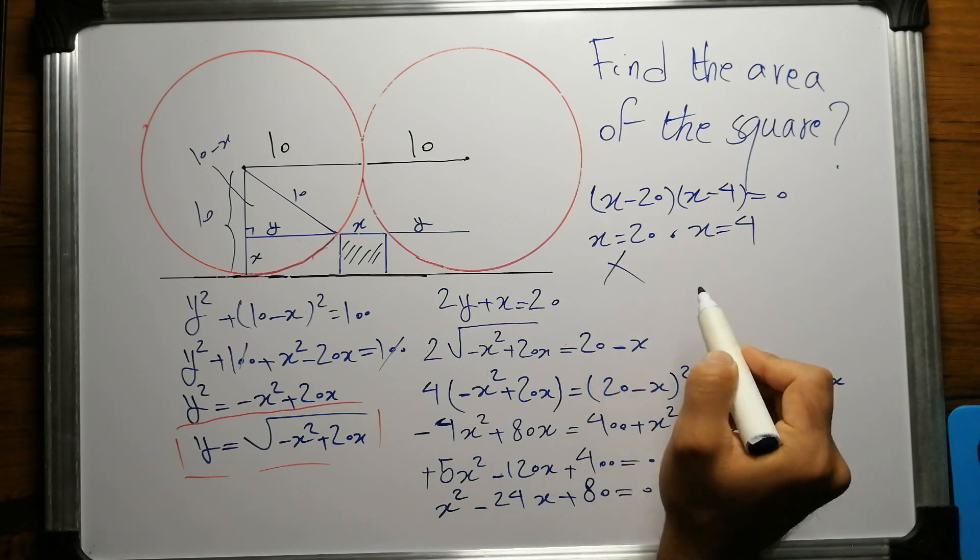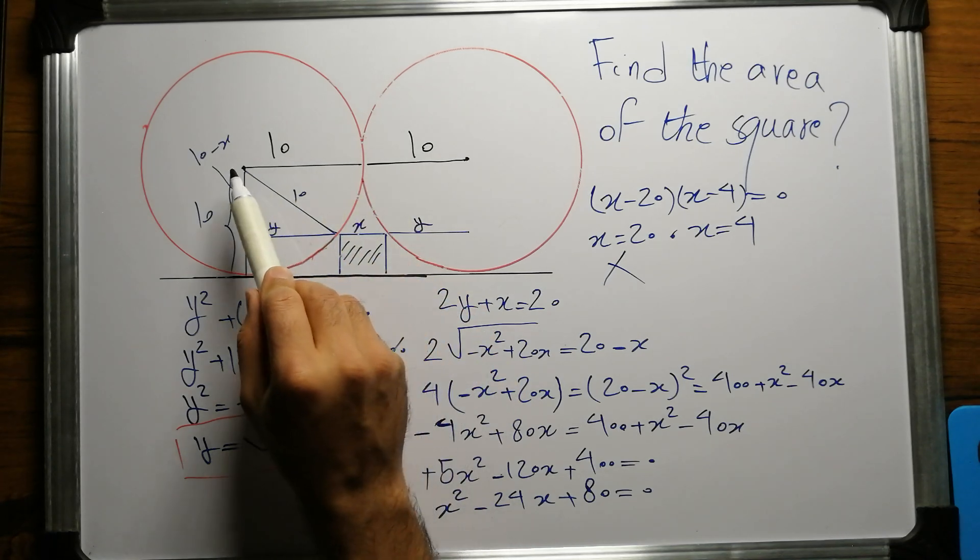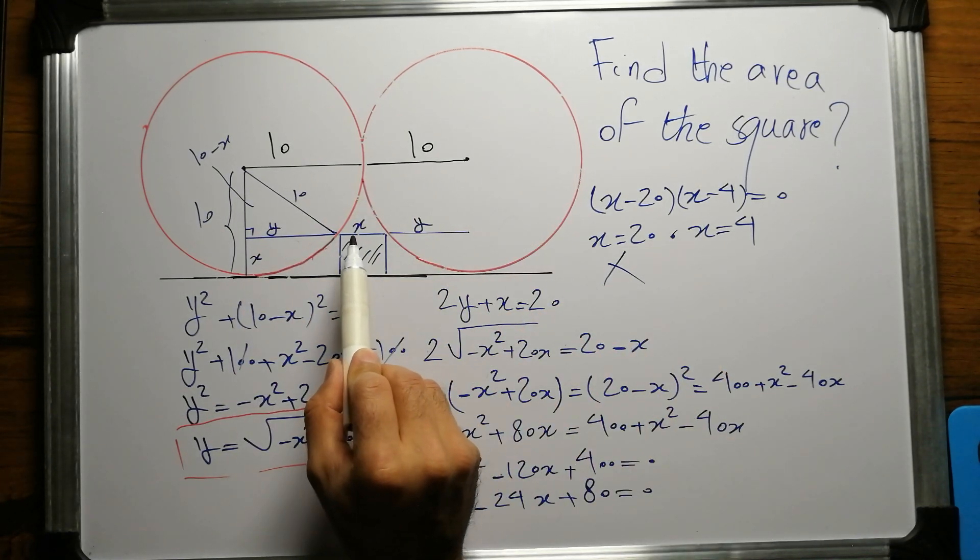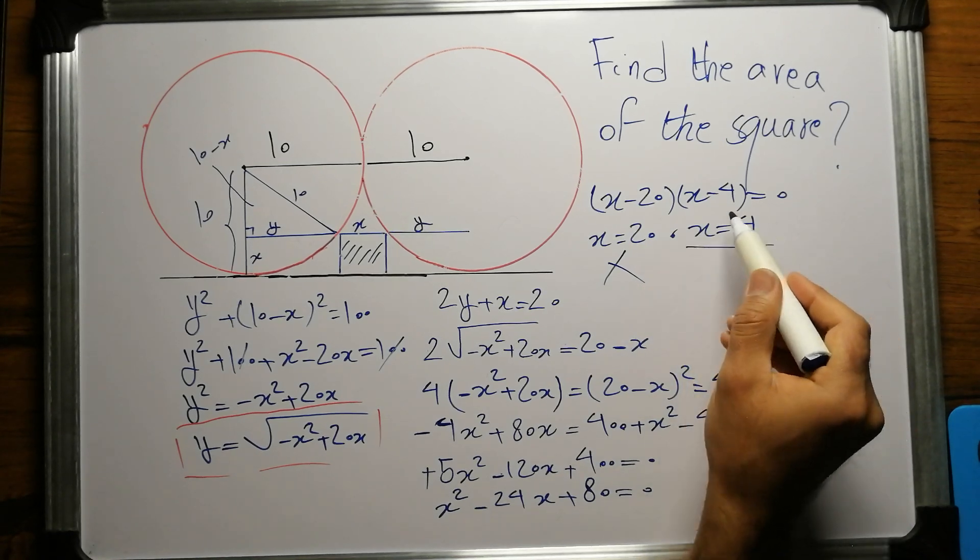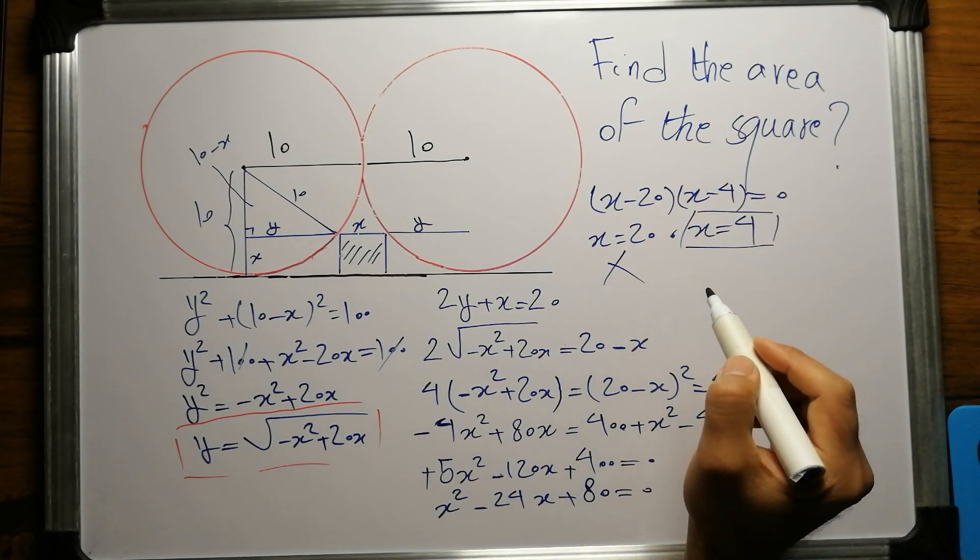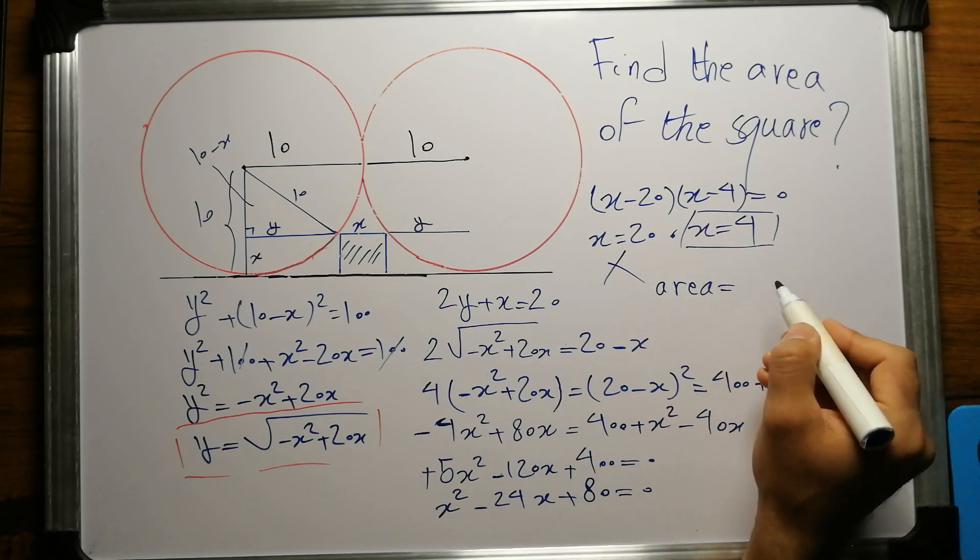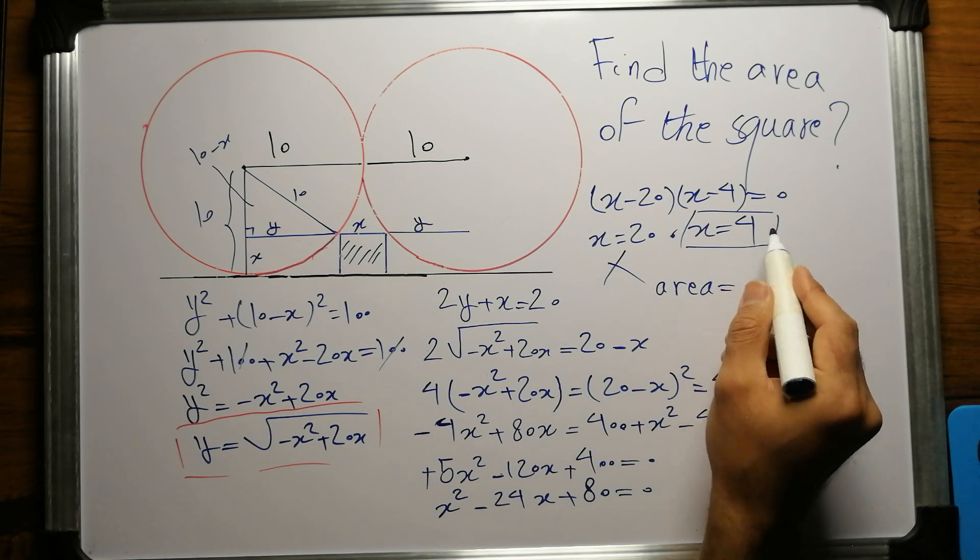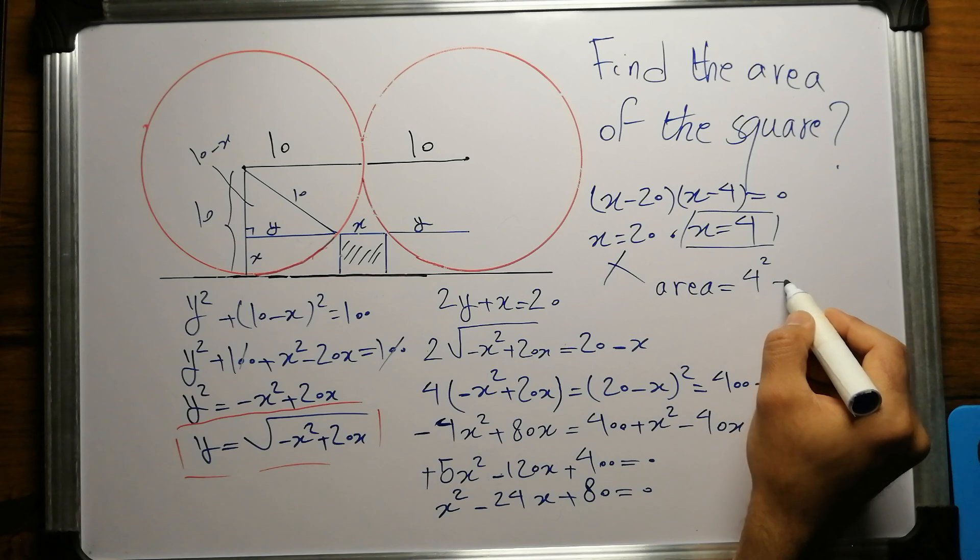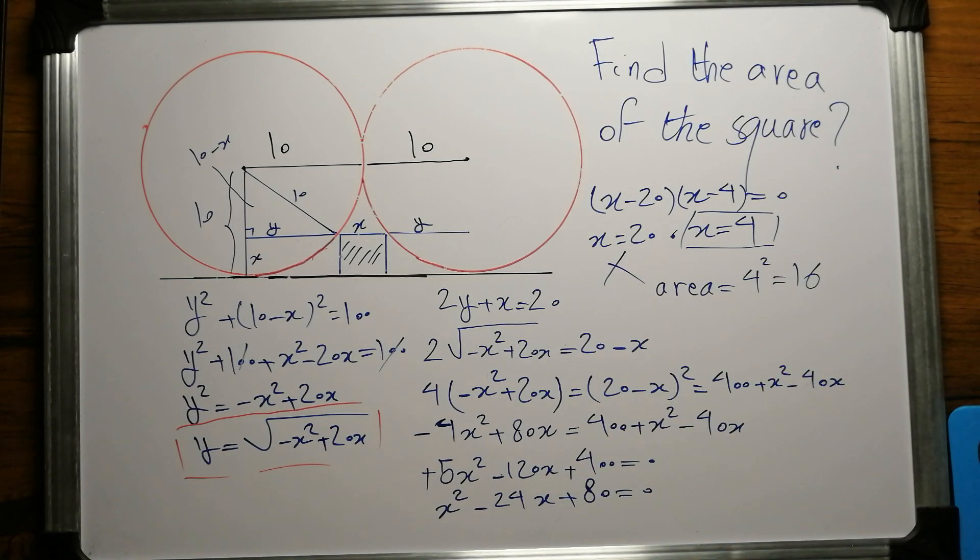x = 20 cannot be our answer because the whole length of these two radii is just 20, so x alone cannot be 20. So x = 4 is our only answer. What is the area of this square? Area is just one of the sides squared, so 4² = 16.